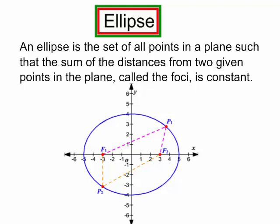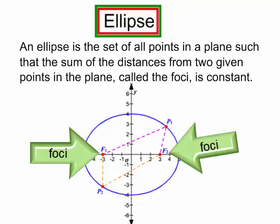Let's talk about ellipse. An ellipse is the set of all points in a plane, such that the sum of the distances from two given points in the plane, called the foci, is constant.